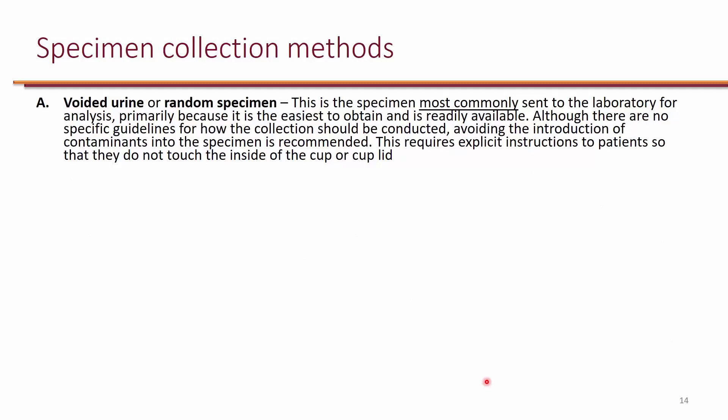Here are some definitions of different types of collection techniques for the urine specimen. This slide is just for your information. The first is voided urine or random specimen. This is basically the most commonly used method by most labs — a cup is given to the patient and they urinate in it.